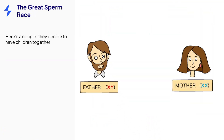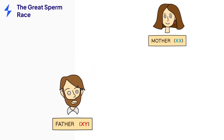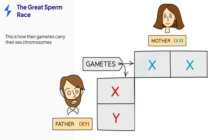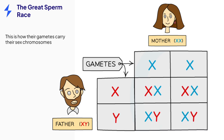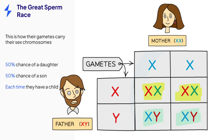This couple decide to have children together. They produce the gametes we saw just now, and the gametes can combine in these combinations. Half of these would give a female child XX, the other half would give a male child XY. Importantly, this is the case for each time they have a child — it's not influenced by whether they have existing children or not. So the overall chance of each sex is 50%, which can also be expressed as 0.5 probability or a 1 to 1 ratio. This explains why the population is near enough 50% female and 50% male.